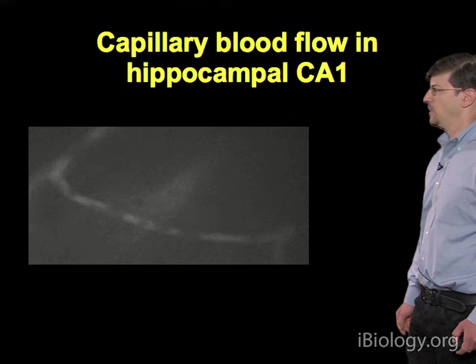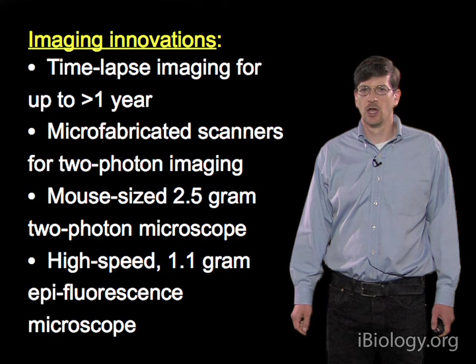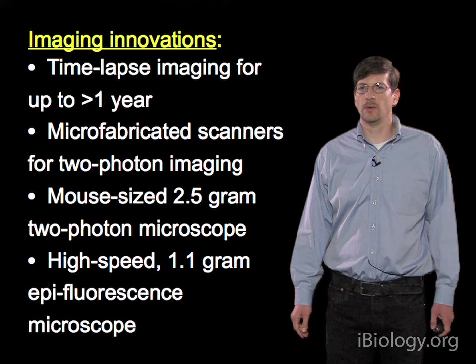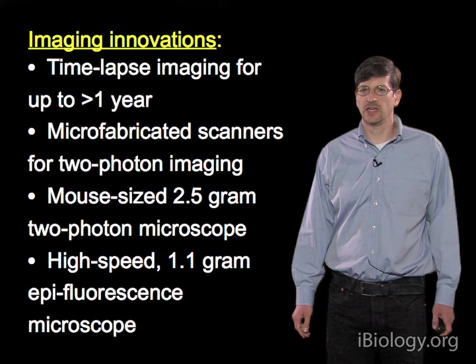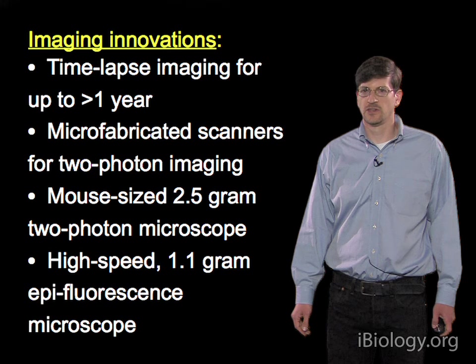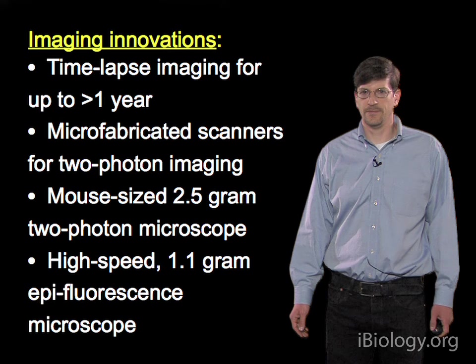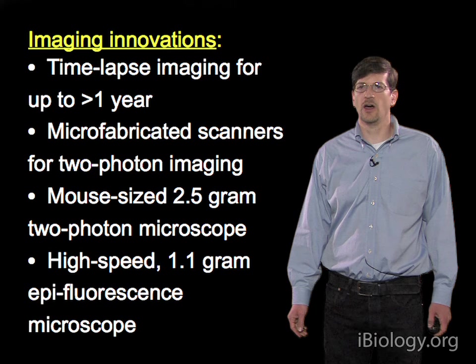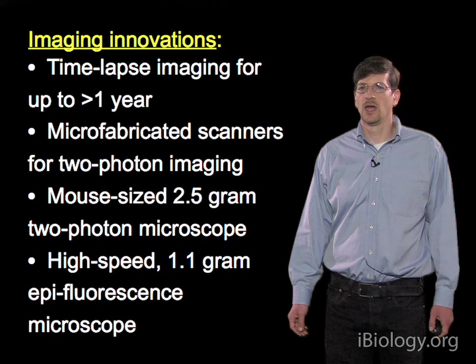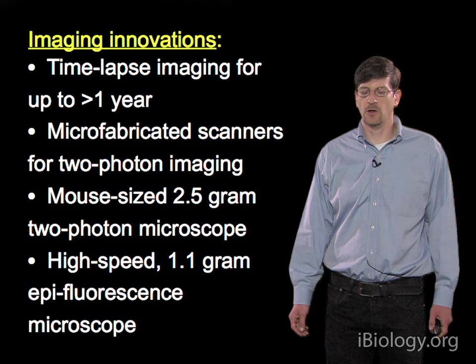Building on these basic capabilities, we have extended our imaging capacities in several directions. First, we developed a chronic mouse preparation for time-lapse or longitudinal imaging at the cellular scale — returning again and again to the same site, the same cells, the same neuronal dendrites, and in some cases even the same synapses — for periods of about two months, occasionally up to a year. Second, we combined the micro-optical lenses with micro-fabricated laser scanning mirrors to create a small mouse-sized two-photon microscope of approximately 2.5 grams, and a complementary high-speed 1.1-gram epifluorescence microscope.